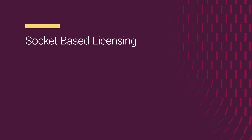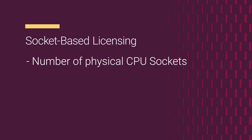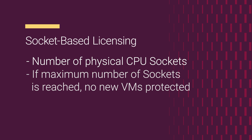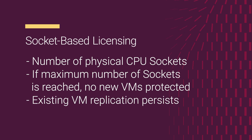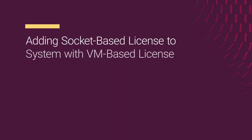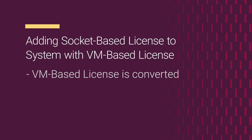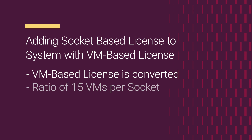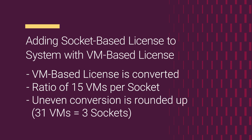Now let's talk about socket-based licensing. In this model, licenses are based on the number of physical CPU sockets in the ESXi hosts hosting the production VMs. Similar to VM-based licensing, reaching the maximum number of sockets per vCenter server means you can't protect new VMs, but existing VM replication persists. If a socket-based license is installed on a system with VM-based licenses, the system will automatically convert VM-based licenses to socket-based licenses at a ratio of 15 VMs per socket. For example, if you have a capacity of two sockets, you can protect 30 VMs. In cases where the ratio doesn't result in an even conversion, the value is rounded up.